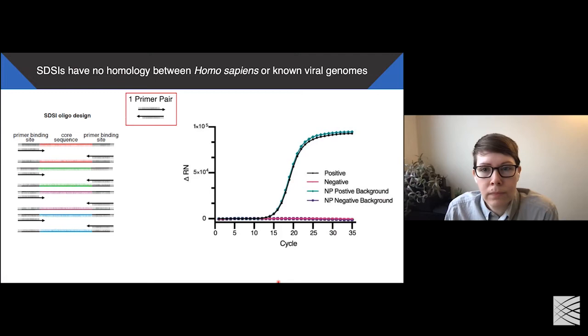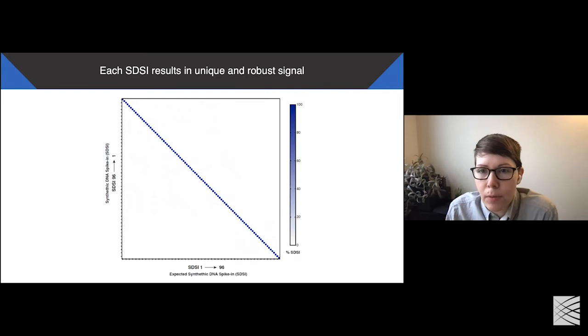Last, we sequenced all of the SDSIs, so this is all 96 of them on their own, to confirm that each of these 96 constructs results in unique, robust, and specific signal of mapped reads. Does anybody have any questions so far? Thanks, Kim. Nothing is posted yet, but I will let you know when there is a question.